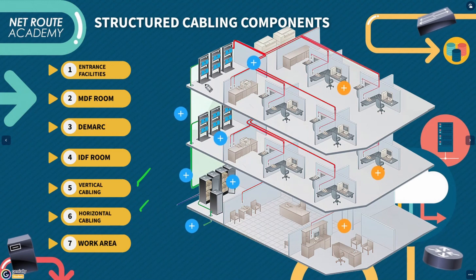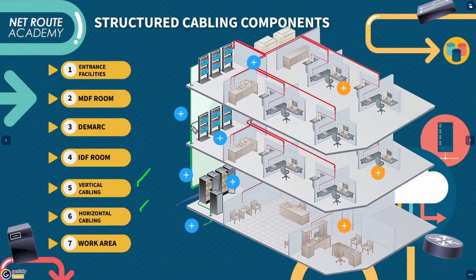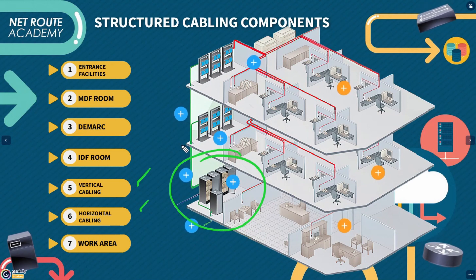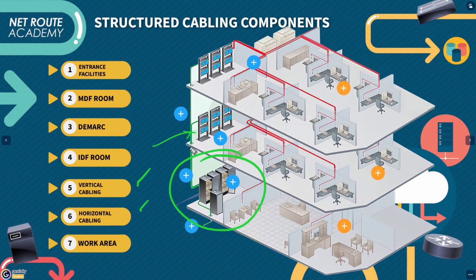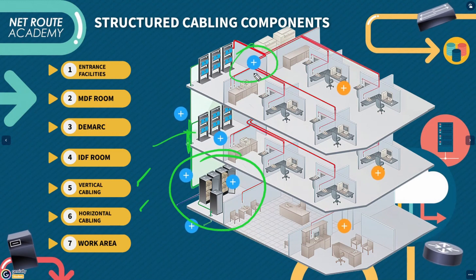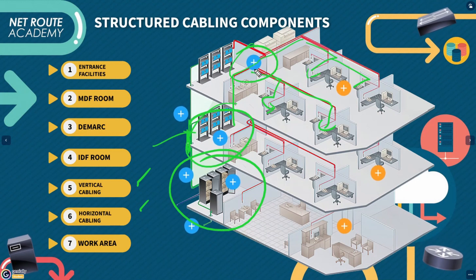Next are vertical cables and horizontal cabling. Vertical cables are used to provide interconnection between telecommunication rooms, entrance facilities, equipment rooms, or buildings. As you can see here, the vertical cables connect between telecommunication rooms. For horizontal cabling, this connects workstations to the nearest data room and to the switch through to the server rooms — the horizontal cabling runs to the workstation, shown in red here.